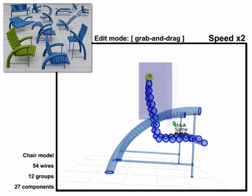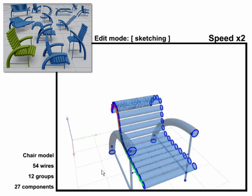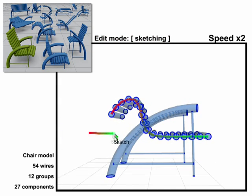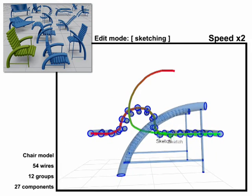We also support a sketch-based interface where the user can draw guiding strokes to affect a significant portion of the model at once. The strokes influence the spatial arrangement of a set of wires and then the edit operation is propagated to the rest of the model.